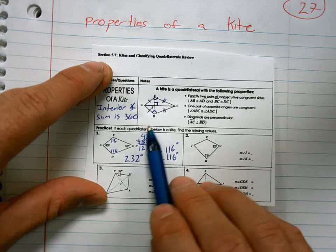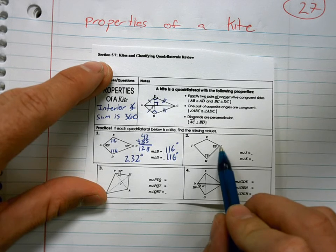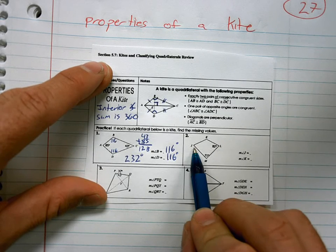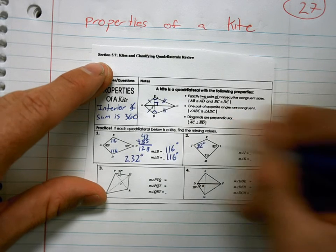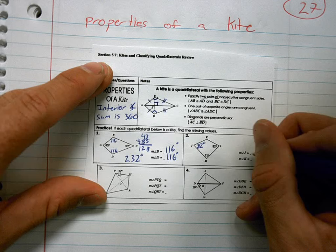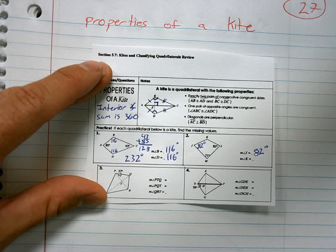I know this is a kite because it says it right here. So if this is a kite, that makes angle L and angle J the same. So angle J must be 82 degrees. I don't know why I said 32. 82 degrees.